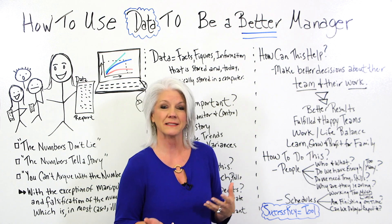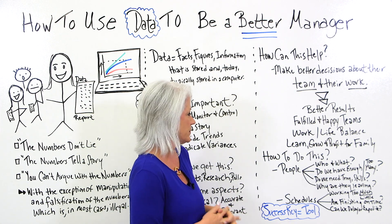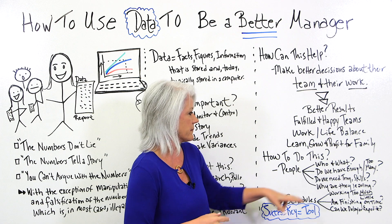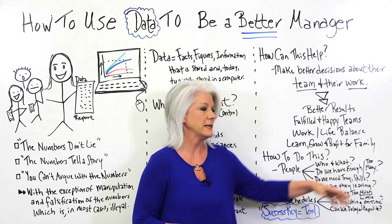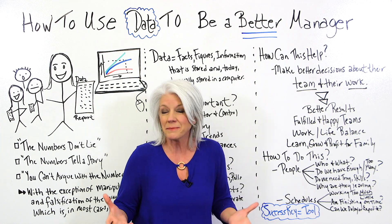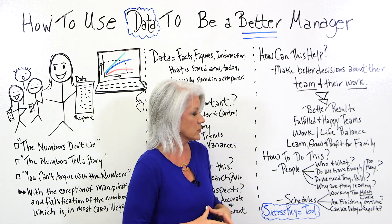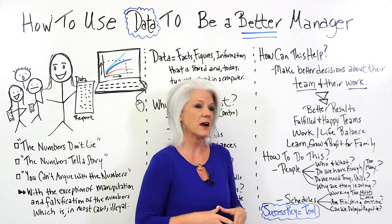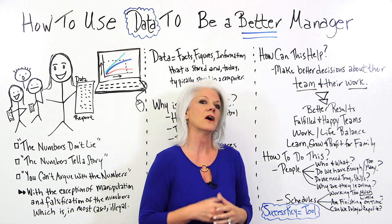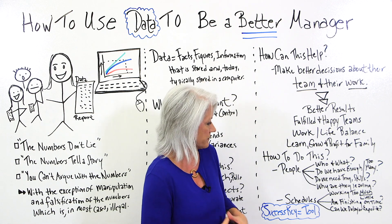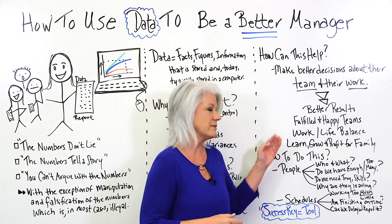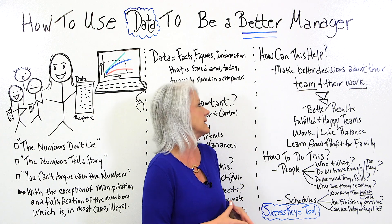Let's look at two aspects: people and schedules, just to name a few. When talking about people, we're looking at who we have on the team and what they're doing. Do we have enough team members or too many? Do we need more training or skills? And in some cases, why are they leaving? When we look at schedules, are team members working too much or too little? Are they finishing their deliverables on time? And can we delay or expedite some of the projects they're working on?